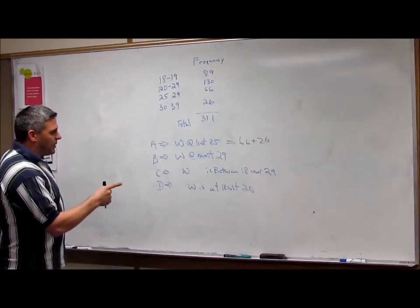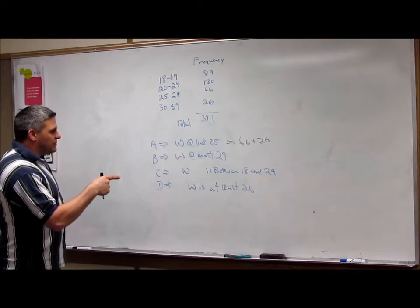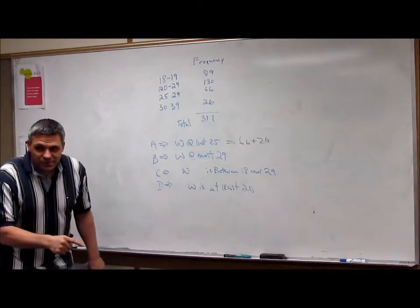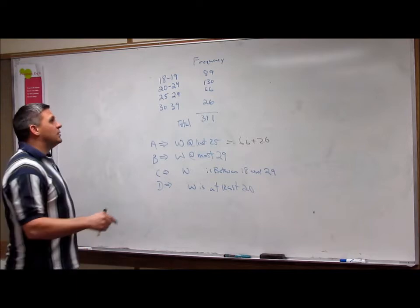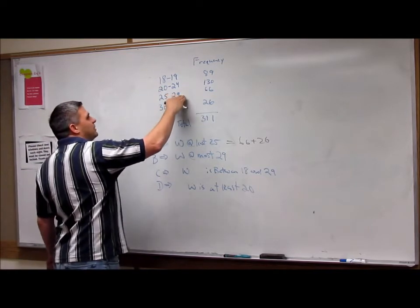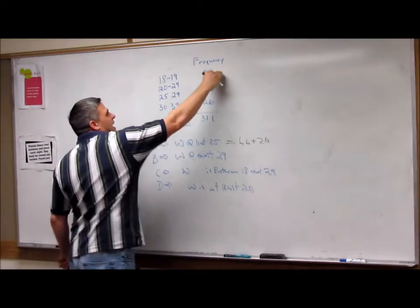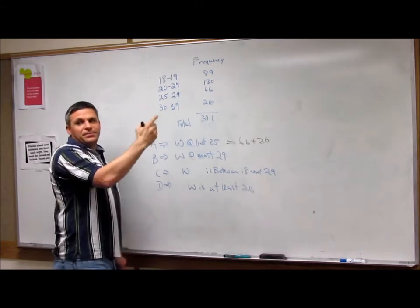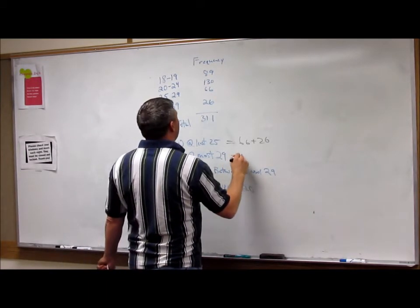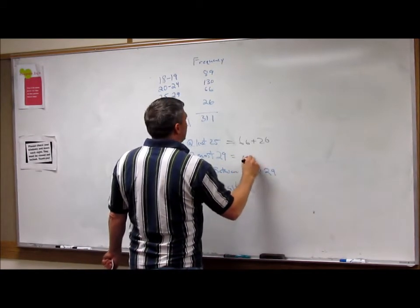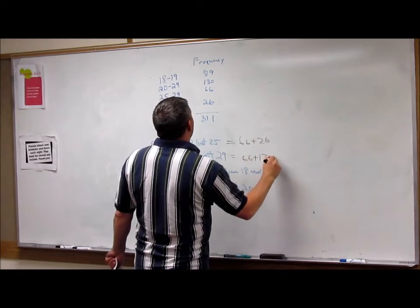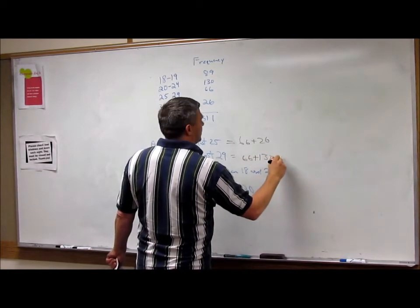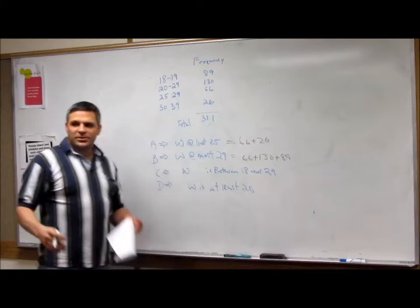Now what about the next one? The woman is at most 29. It'll be 29 minus. So at most she could be this. So it'd be this one, this one, and this one, because she could be all the way up to 29. So that equals 66 plus 130 plus 89. See how that works?